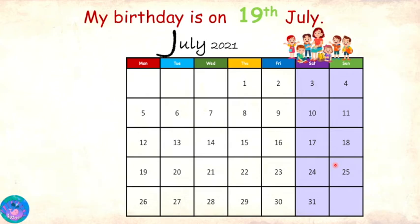Absolutely right! I think we also use ordinal numbers in dates. For example, my birthday is on 19th July.